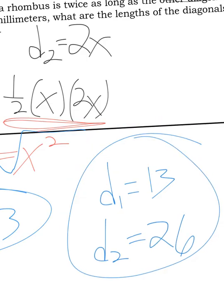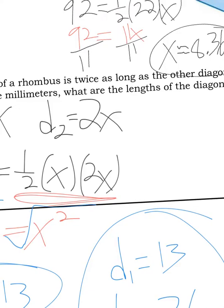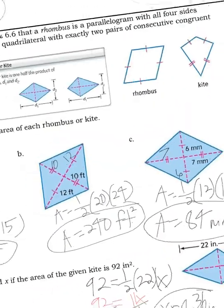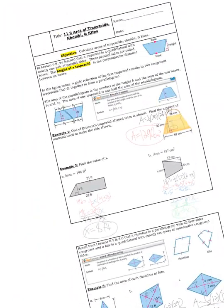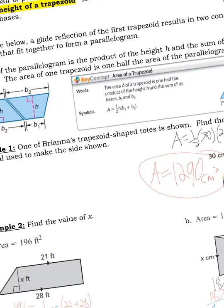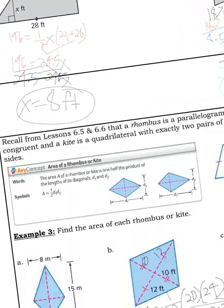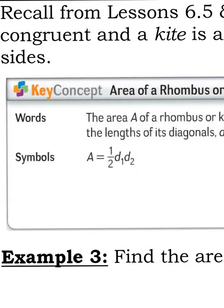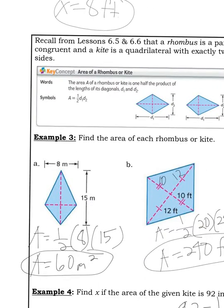So that's it for the notes. Your takeaways here are the area of a trapezoid formula is one half times the height times base one plus base two. And your area of a rhombus or a kite is one half times diagonal one times diagonal two. That's pretty much all you need to know. Have a good day, everybody.